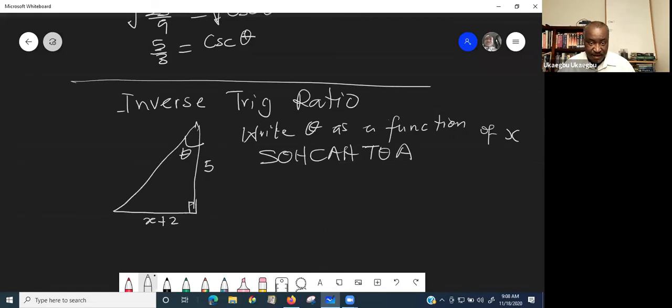So now look at the triangle that is given to you. Tangent. Sign. For example, sign theta is opposite over adjacent. Cos theta is, no, opposite over hypotenuse.